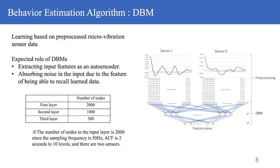The parameters of the Deep Boltzmann machine used in this system are shown in the table below, with three layers of depth and the number of nodes in each of them being first layer 2000, second layer 1000, and third layer 500.